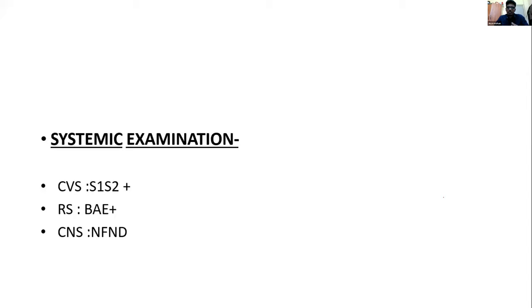Examiner: what is the purpose of doing an ultrasound scan in this case? Student: to confirm where the mass is arising from, whether it is from the liver, and to rule out other primary masses such as stomach. Examiner: is ultrasound useless here — should we jump straight to CT? Student suggests CT. Examiner corrects: ultrasound is still important — for example, gallstone sensitivity on ultrasound is 96%, and this could still be simple obstructive jaundice.